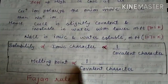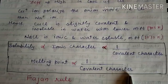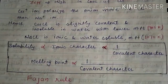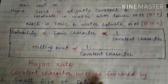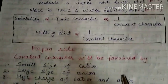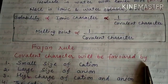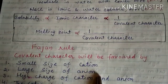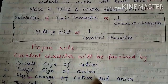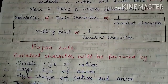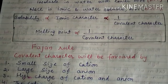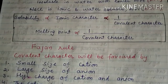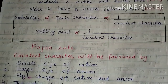To summarize, according to Fajan's Rule, covalent character will be favored when there is: a small size of the cation or a larger size of the anion, a high charge on the cation and anion, and a cation having an 18-electron shell configuration. If these conditions are fulfilled, the covalent character will be high.